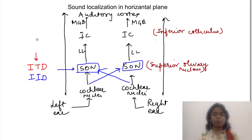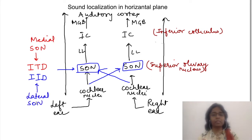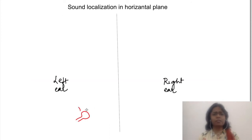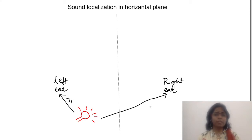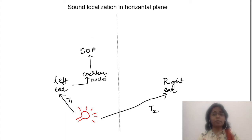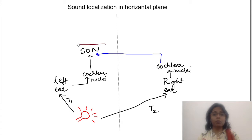The medial superior olivary nucleus has connections which respond to time difference, and the lateral superior olivary nucleus has connections which respond to intensity difference. To understand this, suppose the sound of a horn comes from the left side — it will reach the left ear first. From left ear to left superior olivary nucleus takes less time compared to right ear to left superior olivary nucleus. Neurons in the superior olivary nucleus fire only when information from both ears reaches them at the same time.